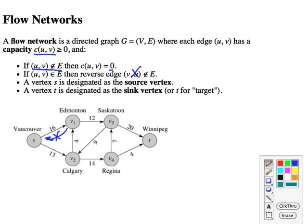We designate one vertex s to be the source vertex, and another vertex t to be the target or sink. We're going to assume that all vertices lie on some path from source to sink. A vertex that doesn't lie on such a path can't participate in any flow, so we can just ignore them.